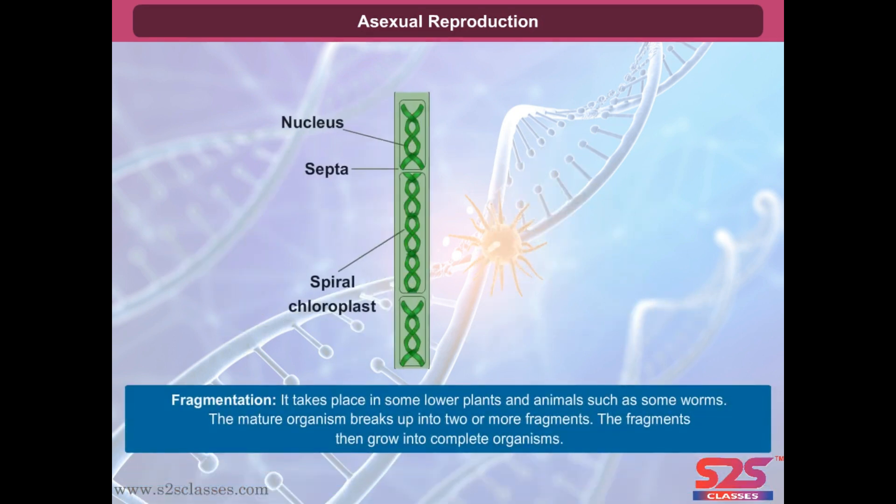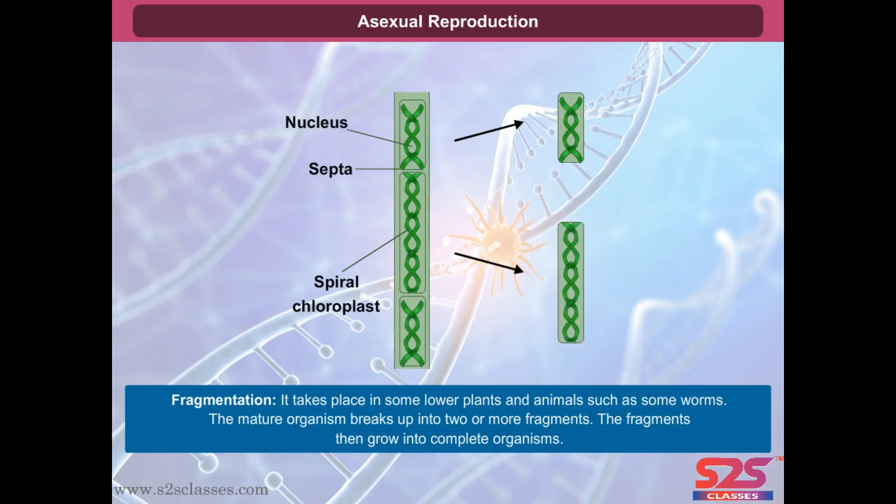Fragmentation takes place in some lower plants and animals such as some worms. The mature organism breaks up into two or more fragments. The fragments then grow into complete organisms.